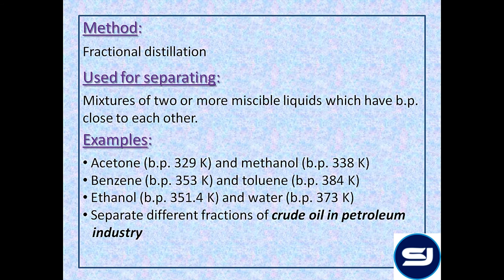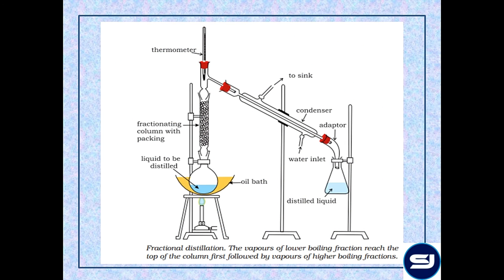Very importantly, fractional distillation is used to separate different fractions of crude oil in the petroleum industry. Crude oil contains a mixture of a large number of hydrocarbons — lower hydrocarbons are generally used as fuels, while higher hydrocarbons have other industrial uses. The apparatus of fractional distillation is similar to simple distillation except for the presence of a fractionating column, which is inserted between the round bottom flask and the distillation column. Fractionating columns can be of different types — commonly used ones have a large number of glass beads or chambers in between.